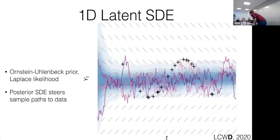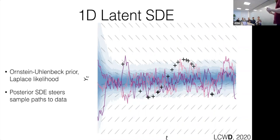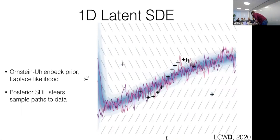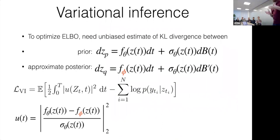Why is the posterior wide at the edges? We can choose an initial distribution over the initial state — it's not hard to be uncertain about the initial state too. The KL divergence or ELBO: we have a prior, an approximate posterior, and a likelihood. The KL divergence ends up being an integral over the trajectory sampled from the approximate posterior dynamics of the instantaneous difference between the drifts divided by the diffusion squared.